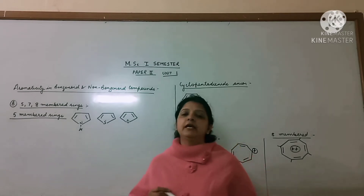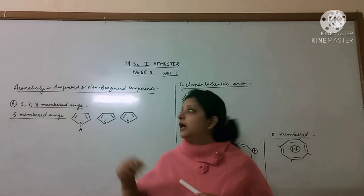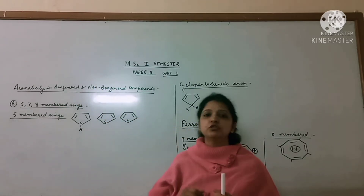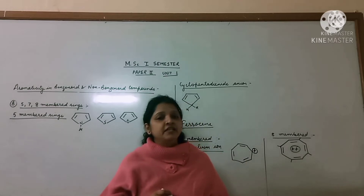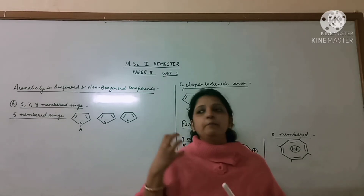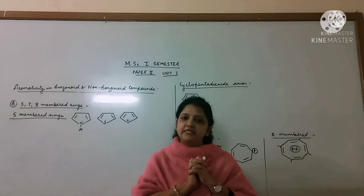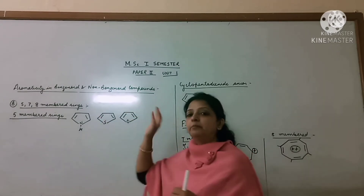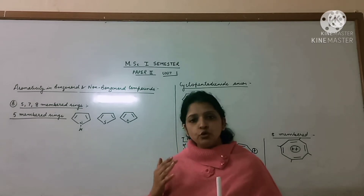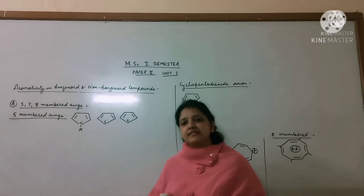The next topic we started was aromaticity. In aromaticity, we are studying benzenoid and non-benzenoid compounds. Benzenoid compounds are the same as benzene, which means that there is an aromatic sextet. Non-benzenoid compounds can also show aromaticity, but there is no need for an aromatic sextet to be present.